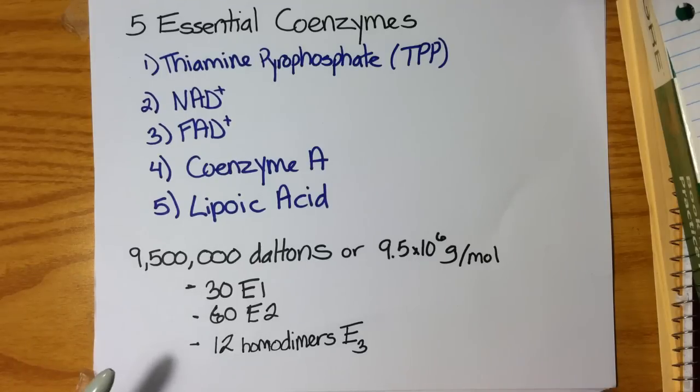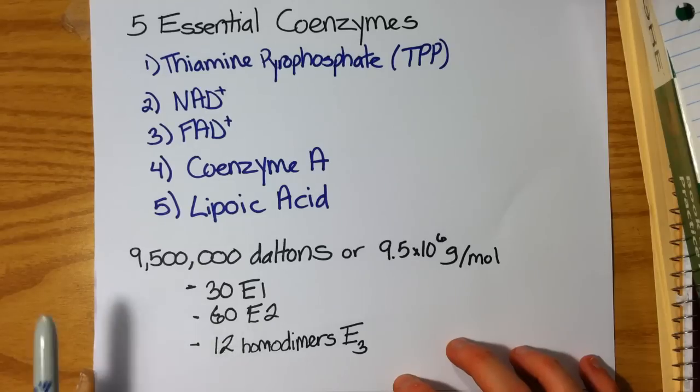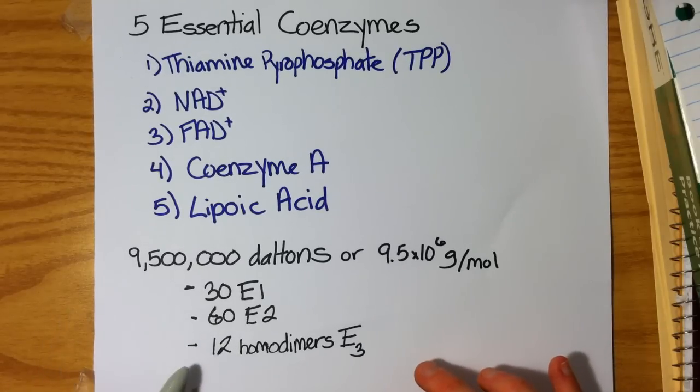Each complex is composed of about 30 E1, 60 E2, and 12 homodimers of E3. So it's essentially 24 E3s.